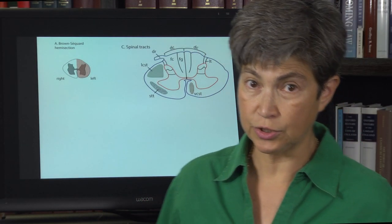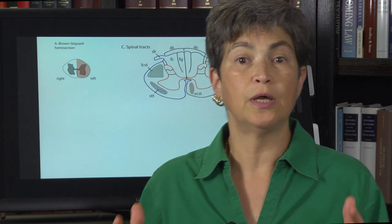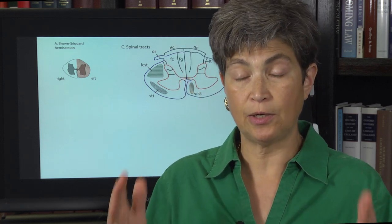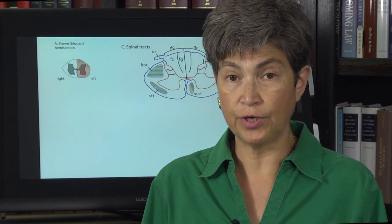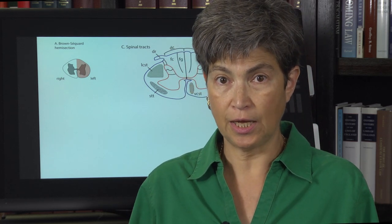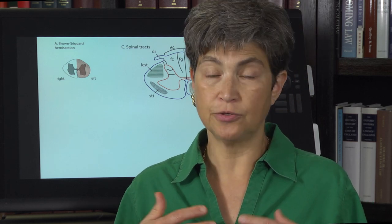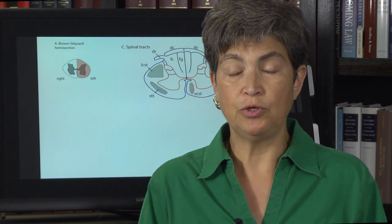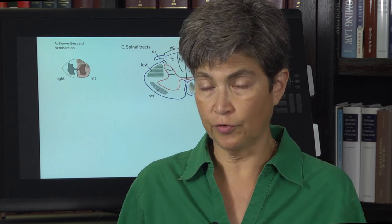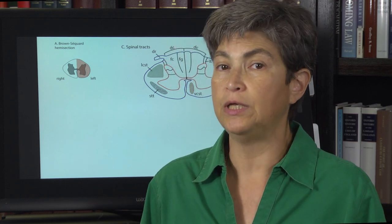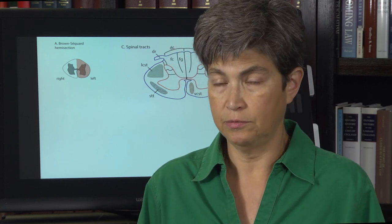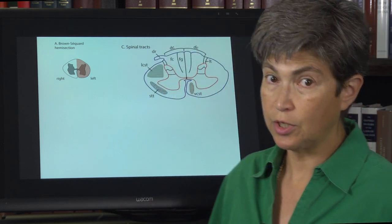Now we're going to use our knowledge of spinal cord anatomy and spinal cord tracks to understand three iconic lesions. These are iconic lesions because they have been used as teaching tools for over a hundred years, and they are inevitably on the boards, particularly this first one, which is the Brown-Séquard.